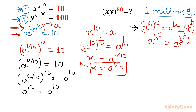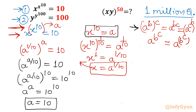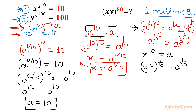By observing both sides — the base is identical and the exponent is also identical — we can directly compare and write A = 10. But A was our substitution variable. Since x^10 = A, raising both sides to the power 1/10: x = A^(1/10) = 10^(1/10). So x equals the 10th root of 10.